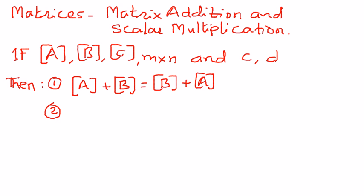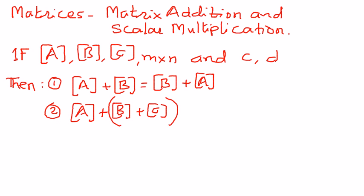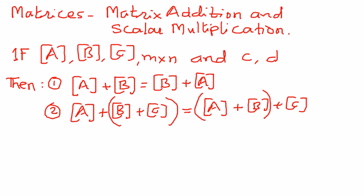The second property: if we have matrix A and two more matrices B and C, and if we were to combine matrix B and matrix C first, and then add matrix A, it is the same as combining matrix A plus B first and then combining it with C. That is, A + (B + C) equals (A + B) + C. This is called the associative property of addition.